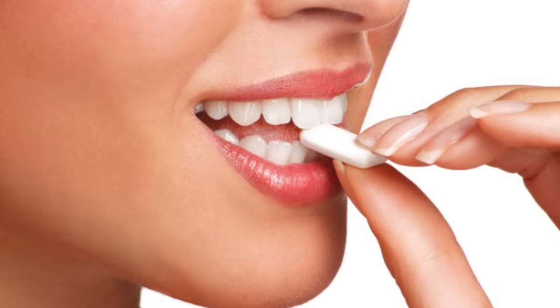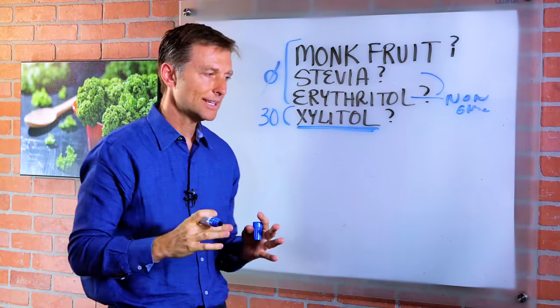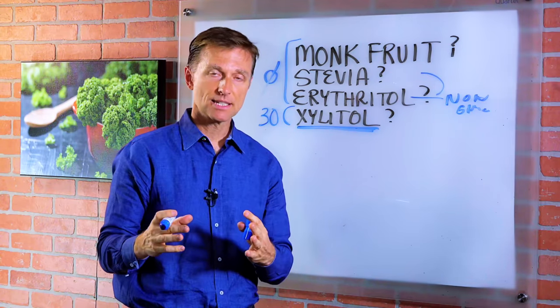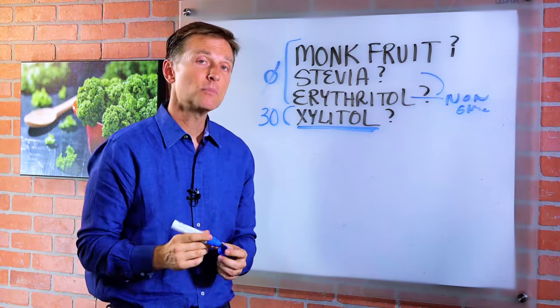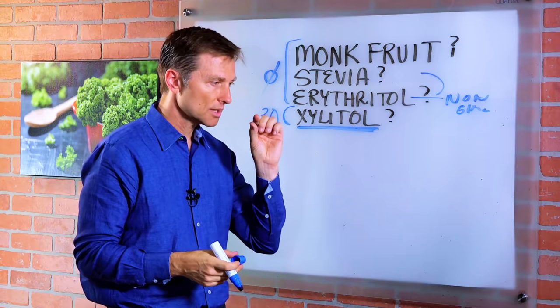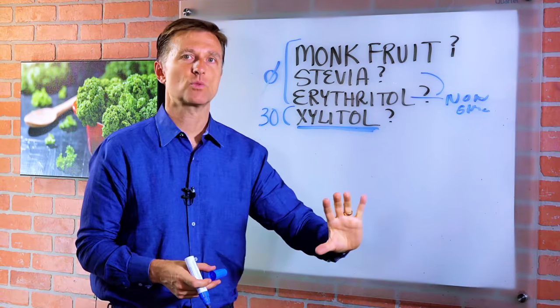If you're actually chewing gum, make sure it's xylitol gum, and don't worry about it interfering with your intermittent fasting. It's not going to bump you out of ketosis. It's such a small amount. The gum that you don't want to consume is the gum with aspartame. You want to avoid these artificial sweeteners.